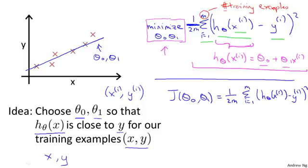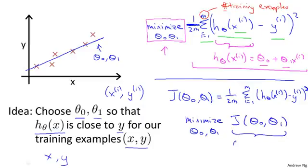And what I want to do is minimize over theta 0 and theta 1 my function j of theta 0 comma theta 1. This is my cost function.